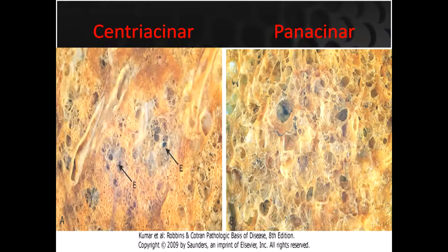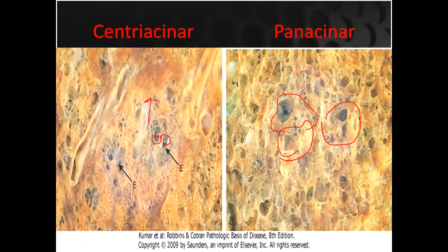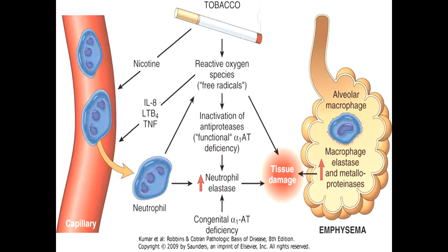In centriacenar emphysema, the proximal areas have small lesions because the proximal area is involved. In panacenar emphysema, the distal areas and bases of the lungs are involved — there are large cyst-like spaces at the bases — while in centriacenar, the apical regions are involved.